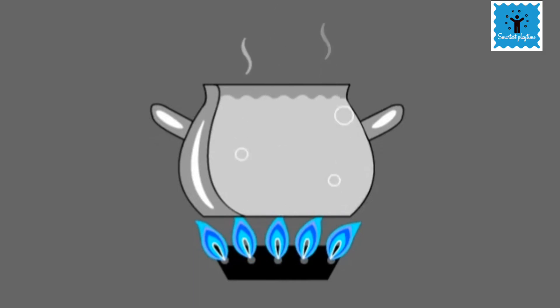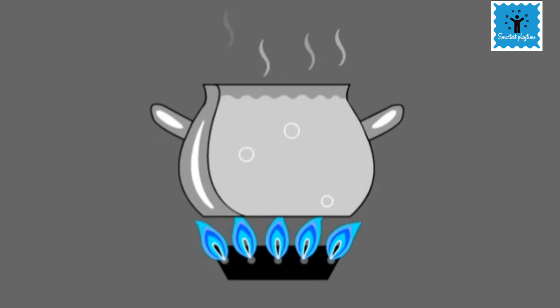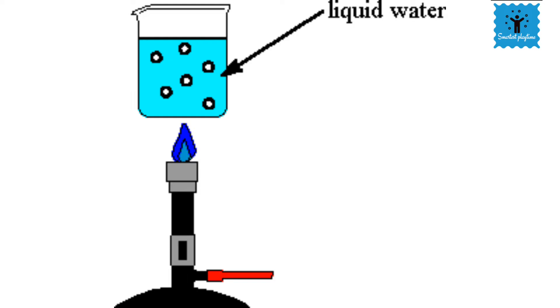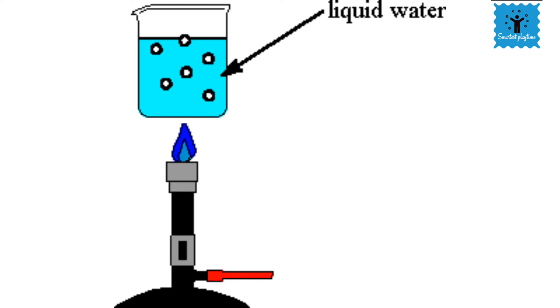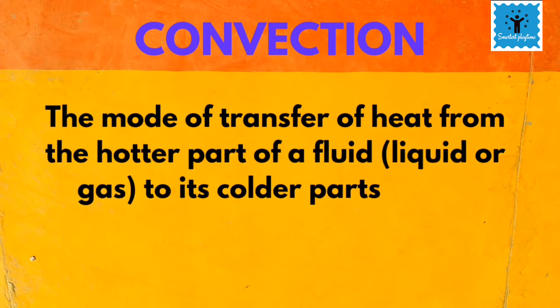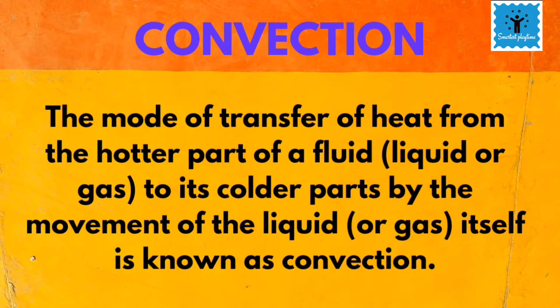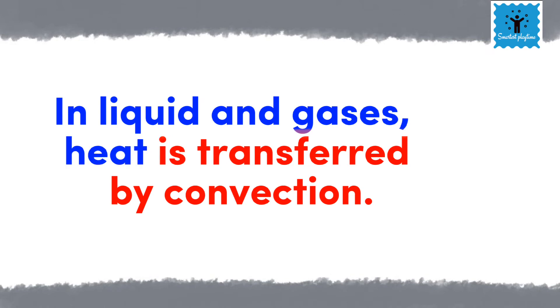How does energy transfer throughout the water in the pot? This transfer of energy is because of convection. In convection, heat is transferred from the hotter part to the colder part of the fluid by the movement of the particles. Convection occurs in liquids or gases.